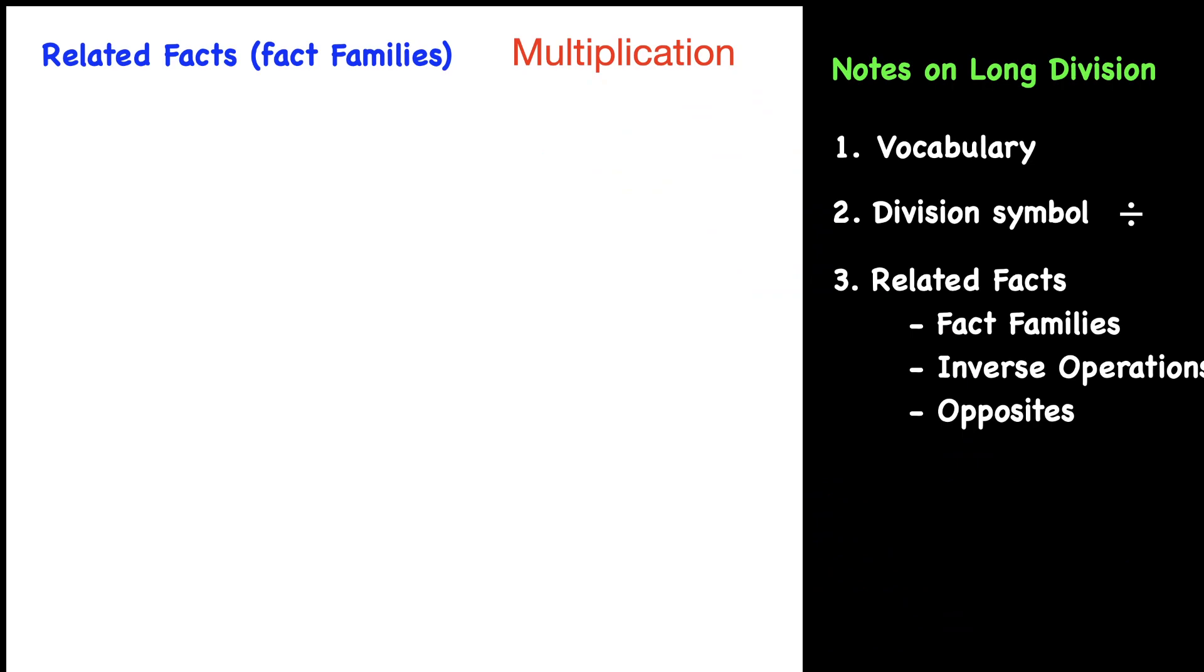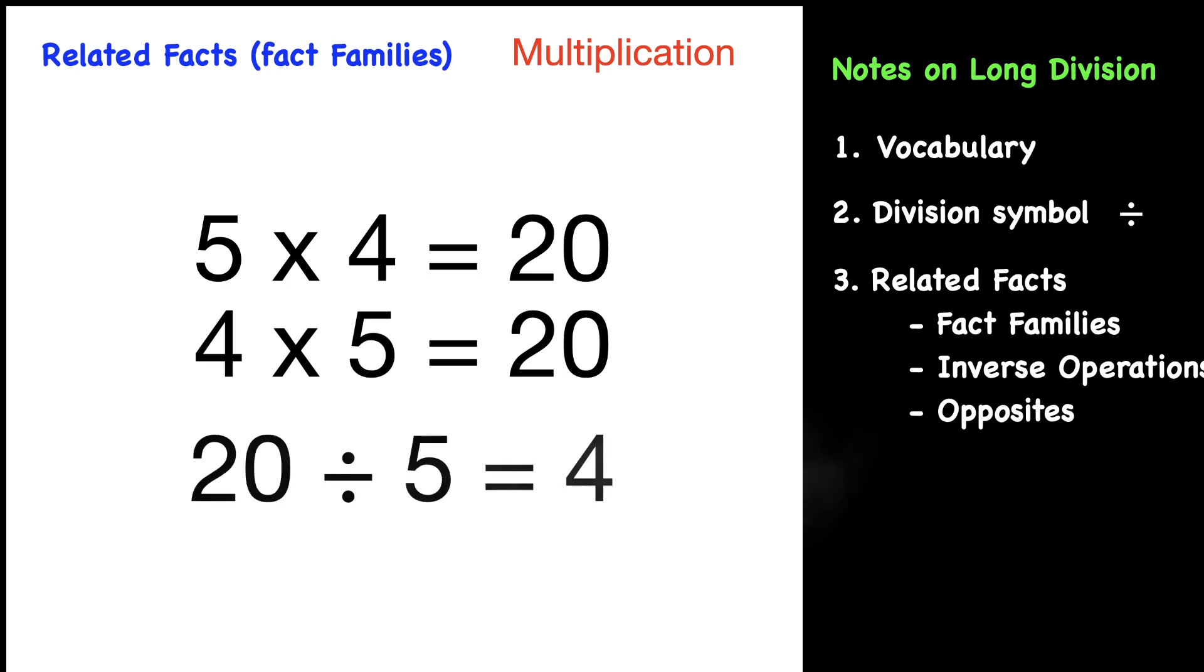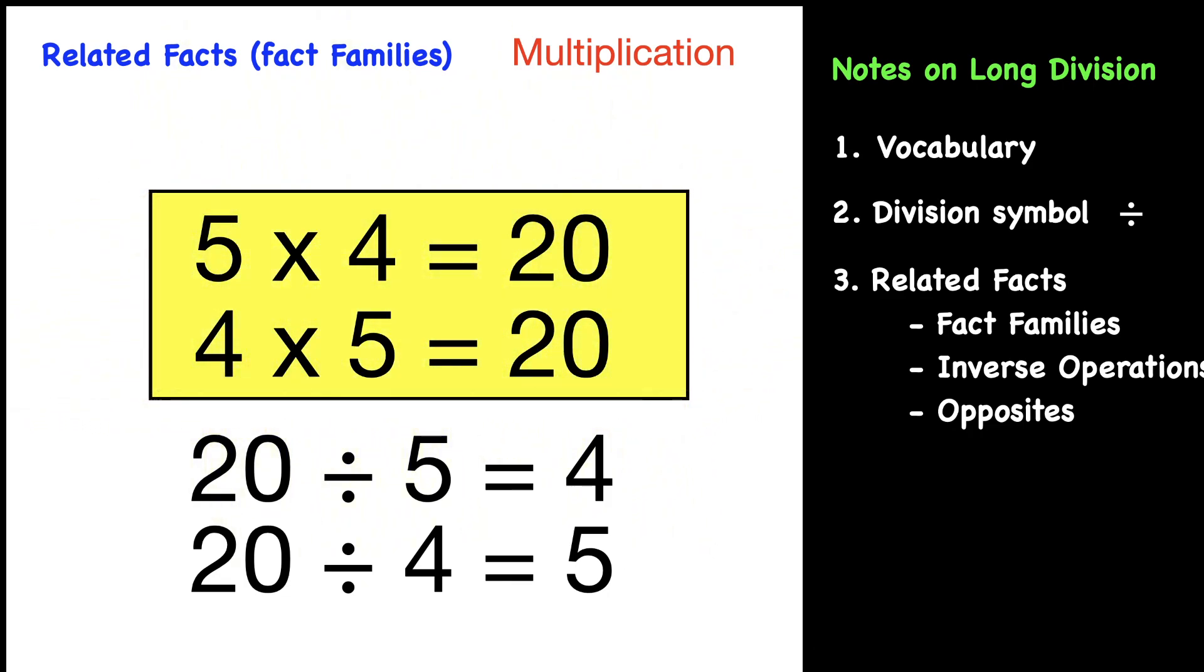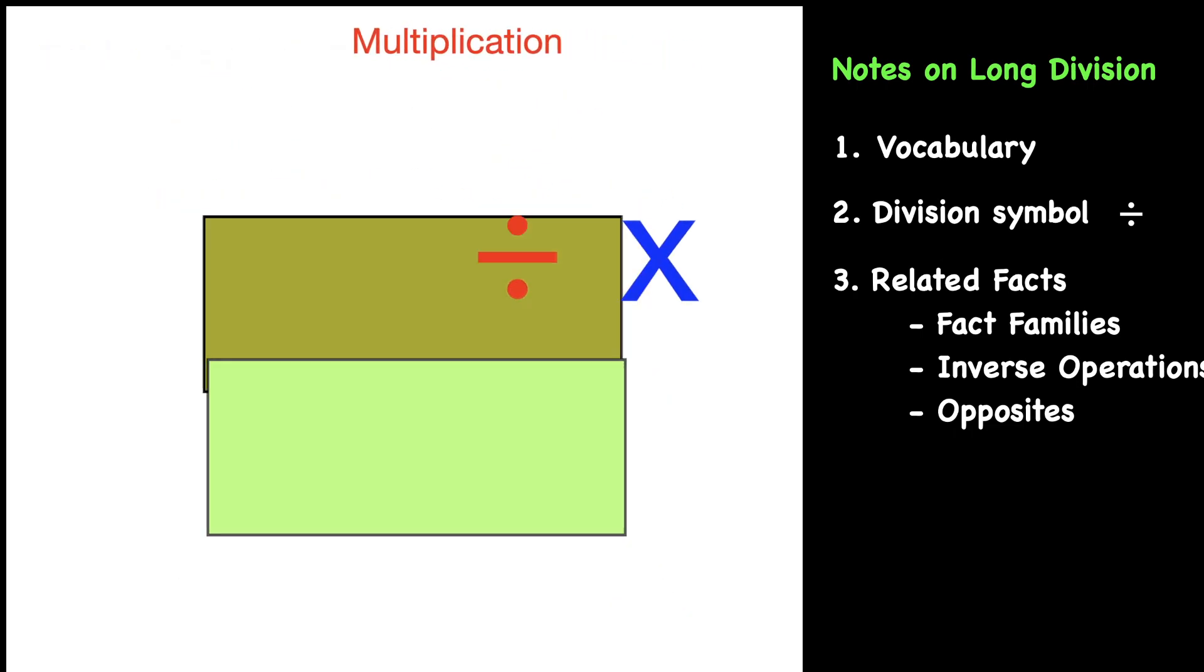Well, we can do the same thing with multiplication. For example, 5 × 4 = 20, or you could switch it to 4 × 5 = 20. But we could also use the same numbers to do division: 20 ÷ 5 = 4 and 20 ÷ 4 = 5. We have two multiplication facts and two division facts that can be used interchangeably to help solve problems. That's what we mean by fact families or related facts.